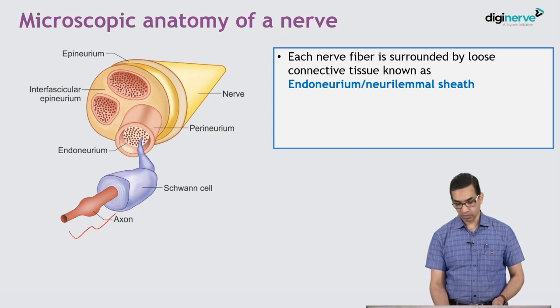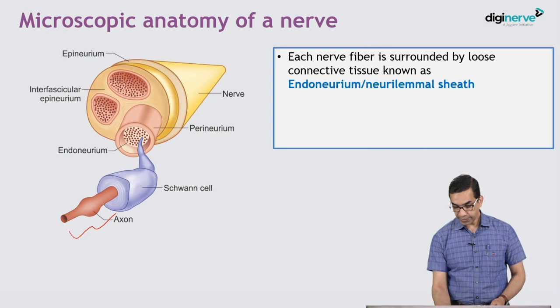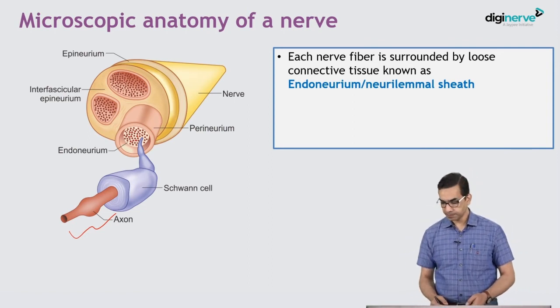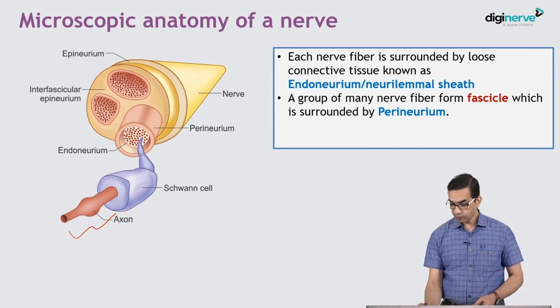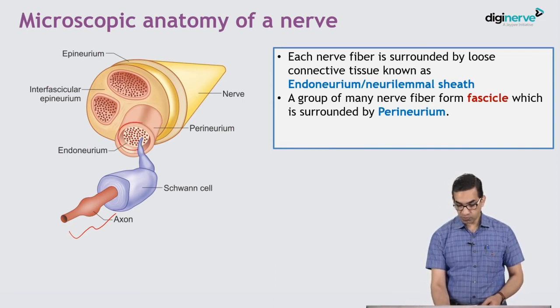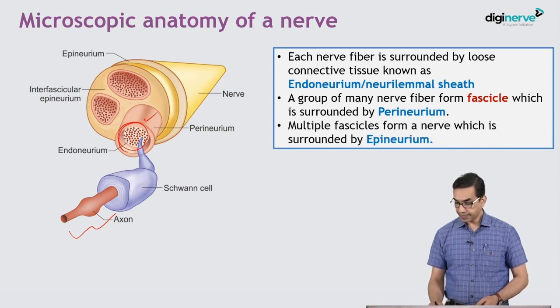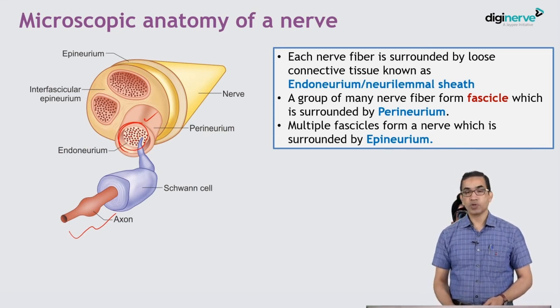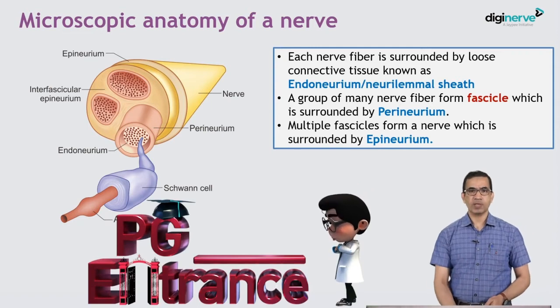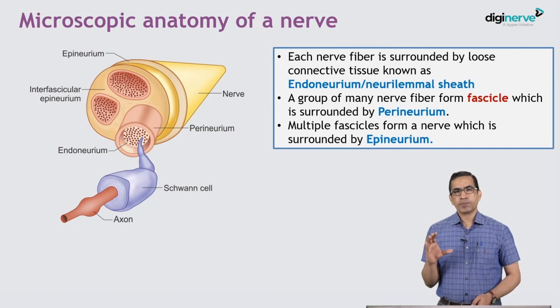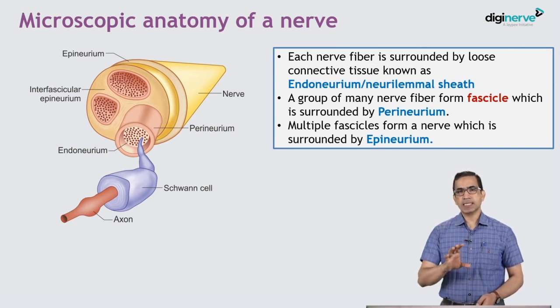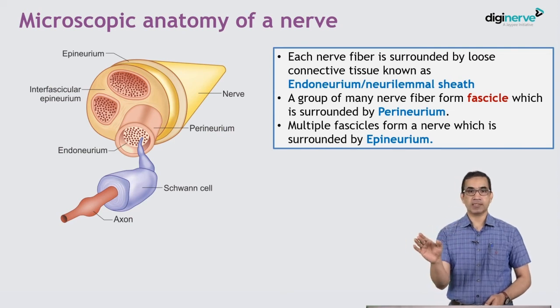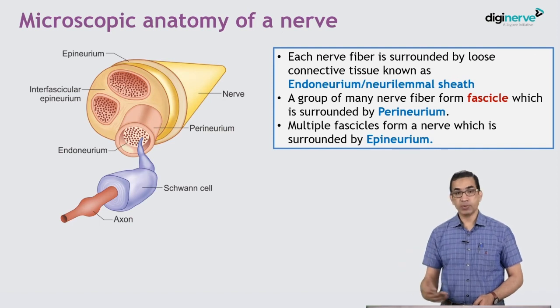Now, each nerve fiber is surrounded by a loose connective tissue known as endoneurium. This is the individual nerve fiber — the axon — surrounded by the endoneurium, also known as the neurilemmal sheath. A group of many nerve fibers forms a fascicle, which is surrounded by the perineurium. Multiple fascicles together form a nerve, which is surrounded by the epineurium. This is important for your MCQs — what is epineurium, what is perineurium, what does each supply, what is a nerve fascicle.